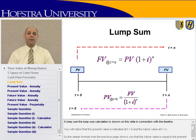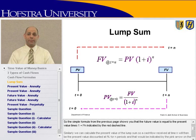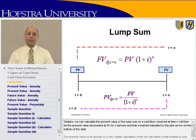The lump sum calculation is shown on this slide in connection with the timeline. The present value is indicated at T equals zero, and the future value at T equals N. The future value is equal to the present value times one plus I to the N, indicated by the red dashed line. Similarly, we can calculate the present value of a lump sum — a cash flow received at time N discounted at 5% for N periods, indicated by the pinkish arrow on the bottom of the slide.